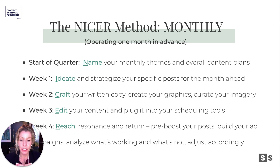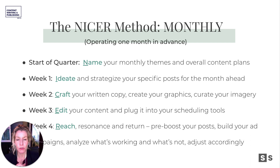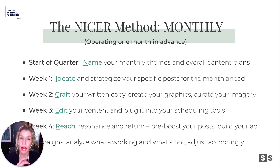And then the REACH, RESONANCE, and RETURN — this is week four as well as the REPEAT. The idea here is: could we go into our scheduling tools like Facebook Content Studio, and could we pre-boost with five or ten dollars some of those social posts so that the moment they hit the newsfeed and the algorithm gets wind of them, there's money behind them and they're getting further boosted — hopefully shown to the audience they're intended for.